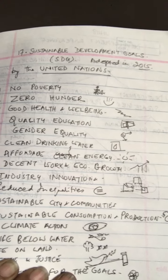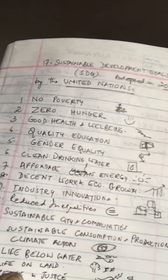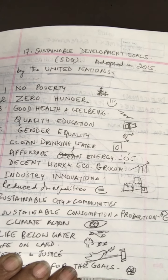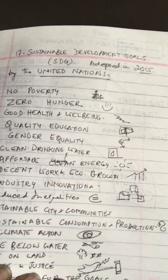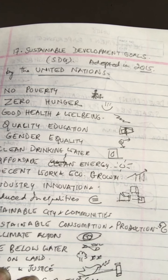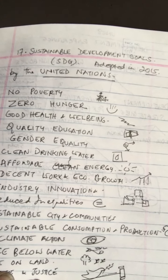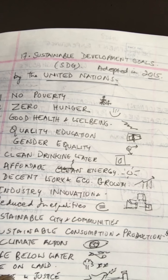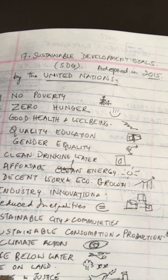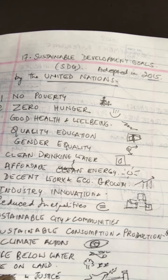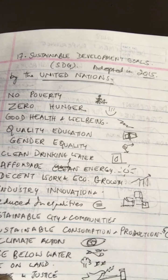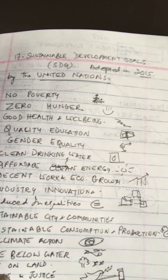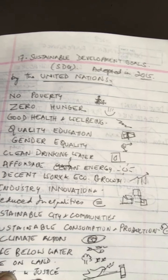Whichever government is in power, they have to incorporate these goals in whatever policy they are making. Let's look at the goals one by one. Goal 1 is No Poverty — it aims to end poverty in all its forms everywhere. This implies focusing on complete eradication of extreme poverty, as well as paying attention to other determinants that influence poverty such as socio-economic, cultural, political, and environmental factors.